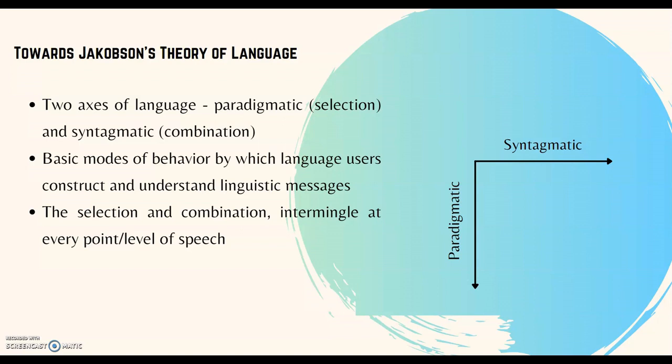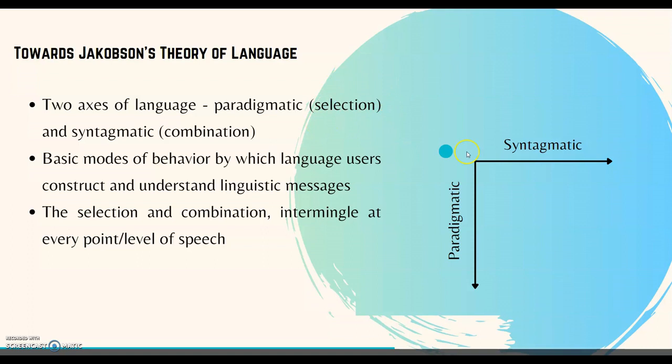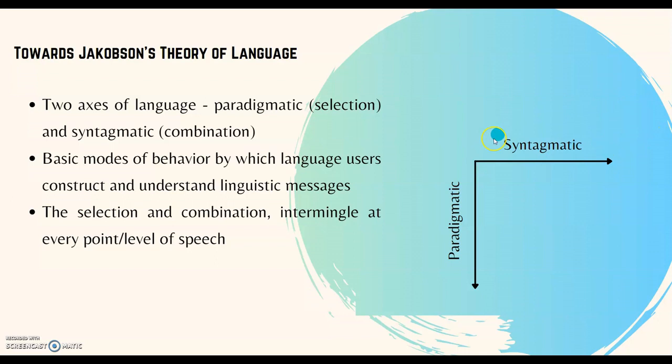Now, before we look into Jakobson's theory of language, let's take a look at how language functions. There are two axes of language: the paradigmatic axis, which is the vertical axis of selection, and the syntagmatic axis, which is the horizontal axis of combination. So you select words and you combine words — these are the basic modes of behavior by which language users construct and understand linguistic messages.